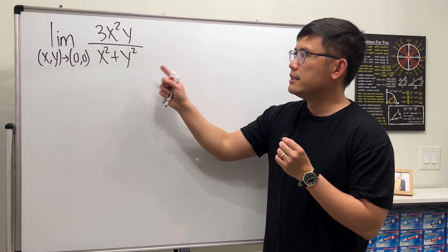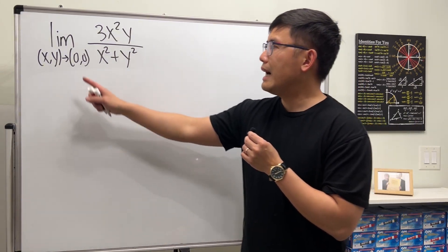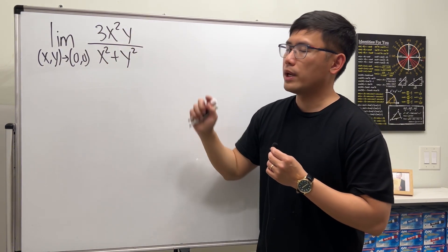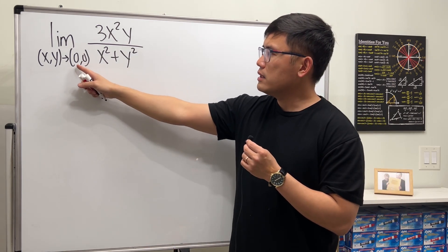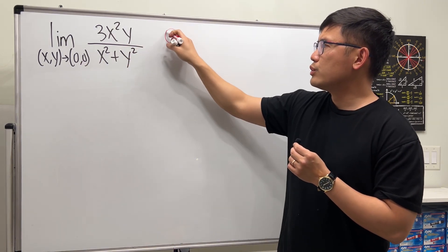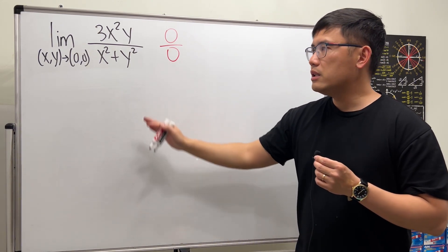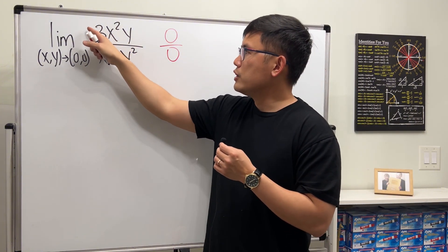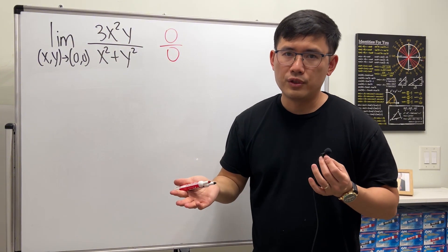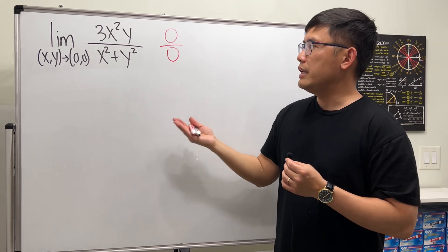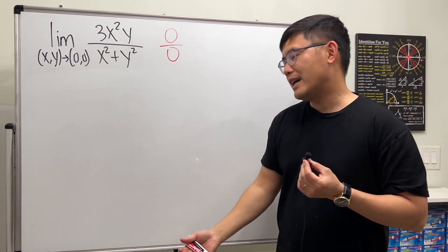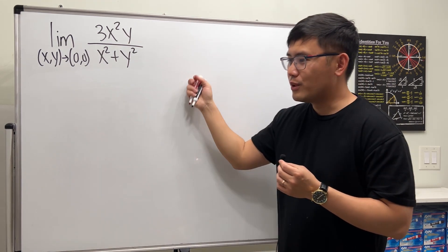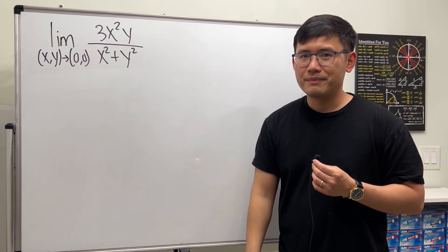Suppose we are going to evaluate this multi-variable limit: the limit as (x, y) approaching (0, 0) of 3x²y over x² + y². If we plug in (0, 0) we get zero over zero, but unfortunately we cannot use L'Hôpital's rule because with a multi-variable function, we'd need to differentiate with respect to x or y or both — it simply doesn't apply.